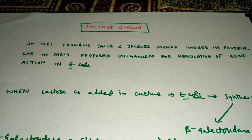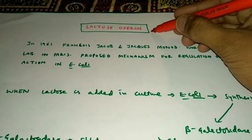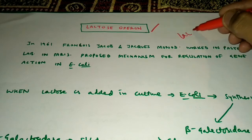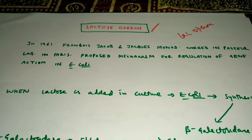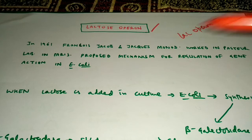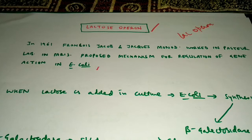Welcome back friends. Today we will discuss about the lac operon or lactose operon. It is basically the metabolic process that occurs in E. coli bacteria. It was first reported by François Jacob and Jacques Monod, also called the Jacob-Monod pathway. They worked together in the Pasteur lab in Paris and proposed the mechanism for regulation of gene expression in E. coli — gene regulation at the transcriptional and translational level in microbes.